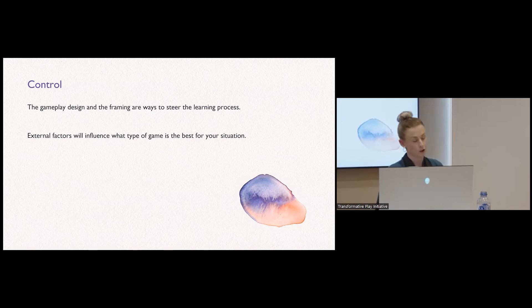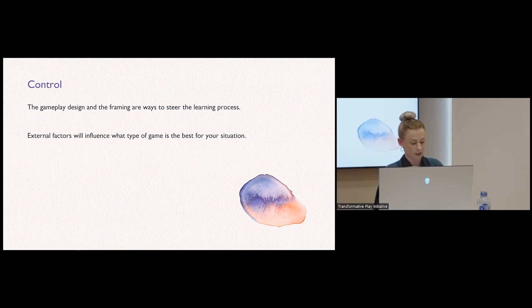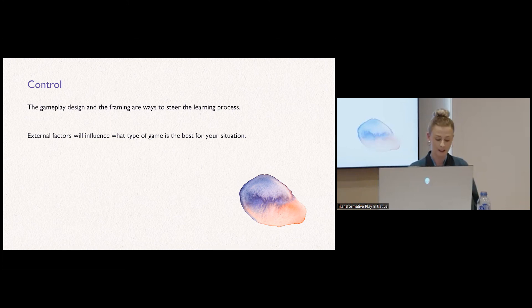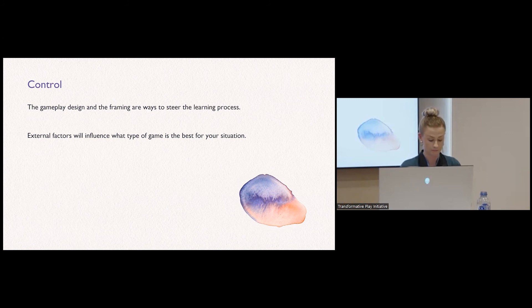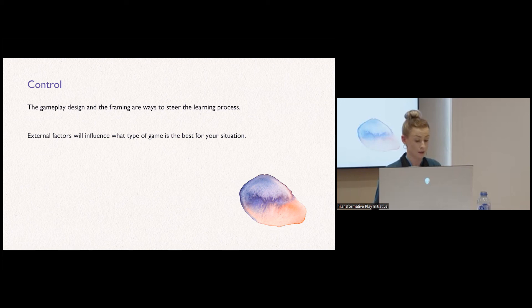The matrix gives insight into how much control one can have over the learning process and outcomes. You want all students to come out having learned what you wanted to teach — not just a few of them, or all of them learning totally different things. As with teaching, you can never have full control over what students learn, but you can facilitate and steer learning experiences in a specific direction. Both the gameplay design and the framing are ways to steer the learning experience, and if both are aligned toward the same goal, this increases the chance for the intended learning to happen and enables higher control over the learning process.